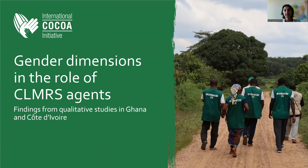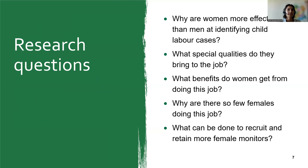Following the quantitative effectiveness review, we wanted to dig deeper through qualitative research to identify social dynamics behind the data. Our research questions were: why are women more effective than men at identifying child labor cases? What special qualities do they bring? What advantages do women gain from the job? Why are there so few women, and what can be done to recruit and retain more female monitors in CLMRS?